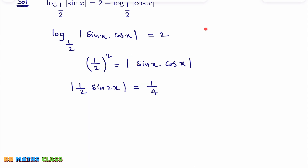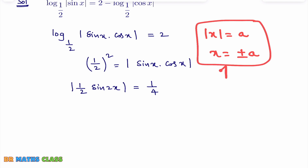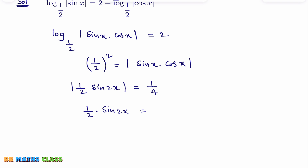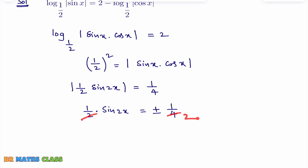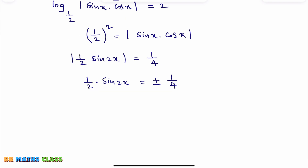We know that if |x| = a, then x = ±a. Applying that here: 1/2 · sin 2x = ±1/4. The 2 in the denominator cancels, giving sin 2x = ±1/2. Now you need to find for what values of x is sin 2x equal to plus or minus 1/2.